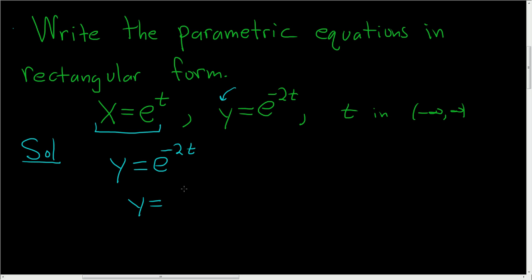So rewriting this, we can write this as 1 over e to the 2t. We're not quite there yet, we don't quite have e to the t. So we can write this as 1 over, and then write e to the 2t as e to the t squared.